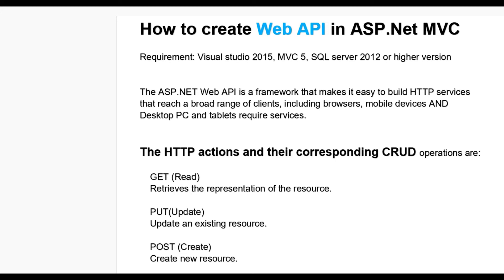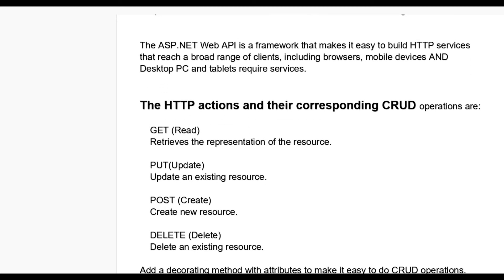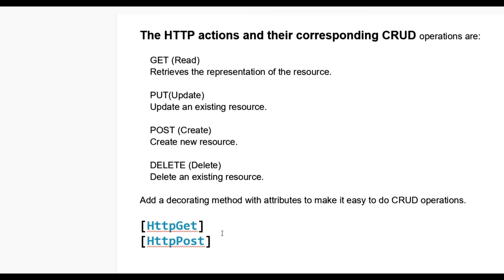The HTTP actions and their corresponding CRUD operations are: GET to get the record from the database, PUT to update records in the database or any resources, POST to create a new record or resource, and DELETE to delete the record from the database. There are also corresponding methods with attributes in Web API to make it easy to do CRUD operations — HTTP GET, HTTP POST, HTTP PUT, and HTTP DELETE.